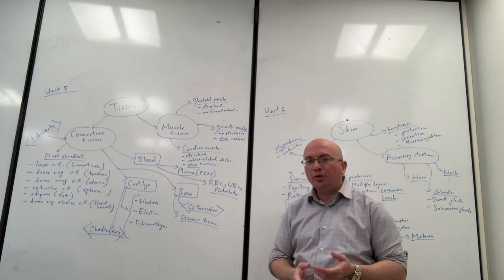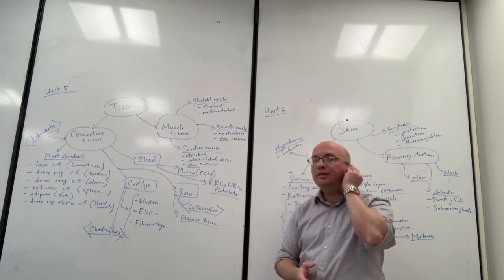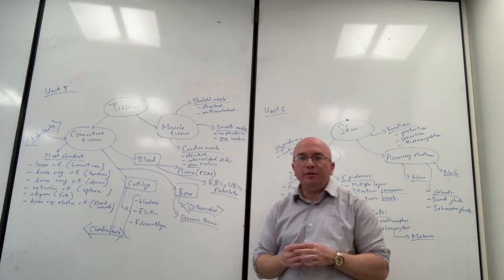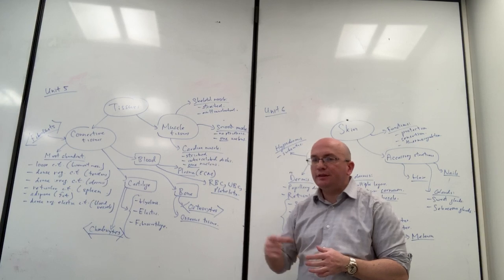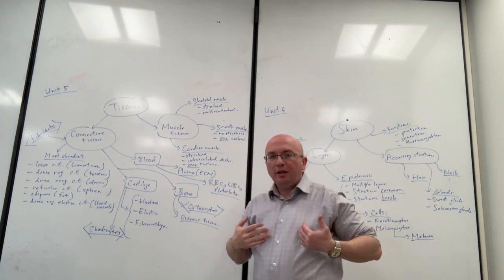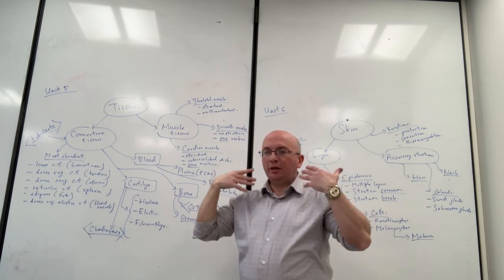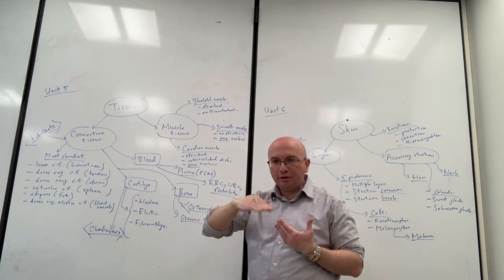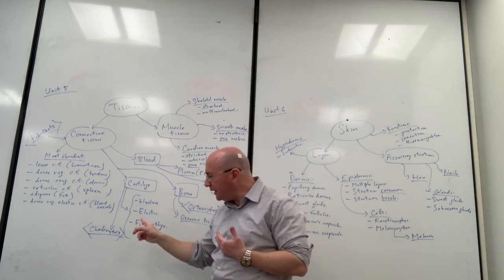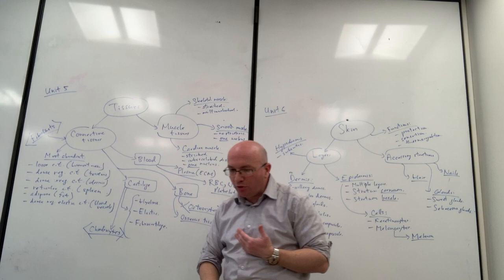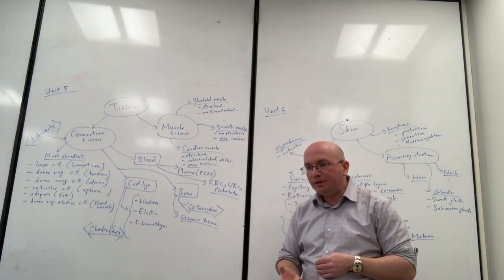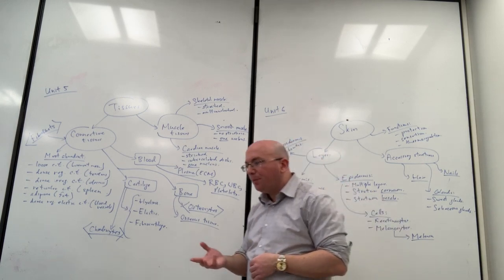Elastic cartilage is found in a few locations such as the external ear and the epiglottis of the respiratory system. Fibrocartilage is primarily found in the intervertebral discs in the spinal column. The vertebrae are the bones protecting the spinal column, and those cushions between the vertebrae - the intervertebral discs - histologically consist of fibrocartilage, which is a tougher cartilage material better suited for that purpose.